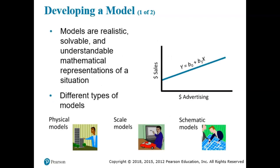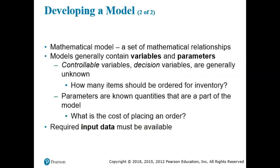When developing a model, we have to create a realistic, solvable, and understandable mathematical representation of a situation. Different types of models include physical models, scale models, and schematic models. A mathematical model is a set of mathematical relationships. Models generally contain variables and parameters. Controllable variables — or decision variables — are generally known; for example, how many items should be ordered for inventory. Parameters are known quantities that are part of a model, such as the cost of placing an order.